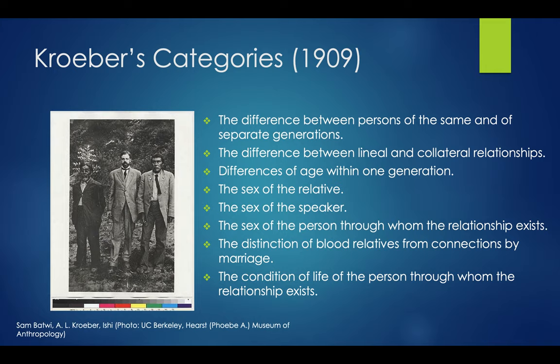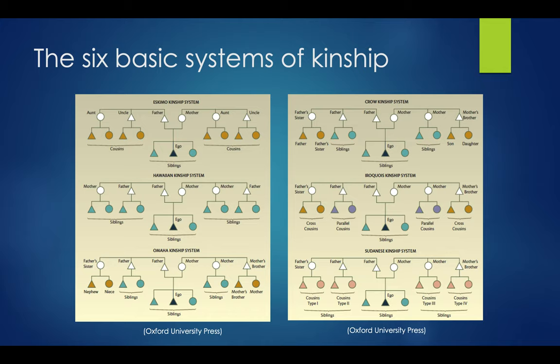There is the distinction of blood relatives from what we call affinal relationships — connections by marriage, so your brother versus your brother-in-law — and then the condition of life of the person through whom the relationship exists. We're going to talk about six systems: the Eskimo, Hawaiian, Omaha, Crow, Iroquois, and Sudanese kinship systems.